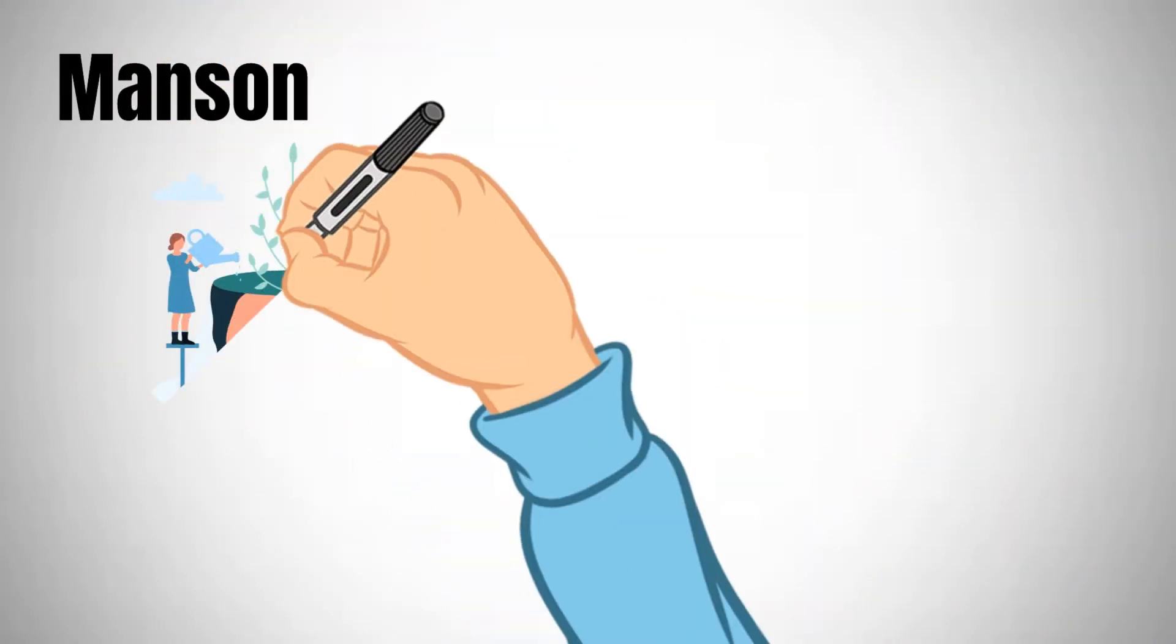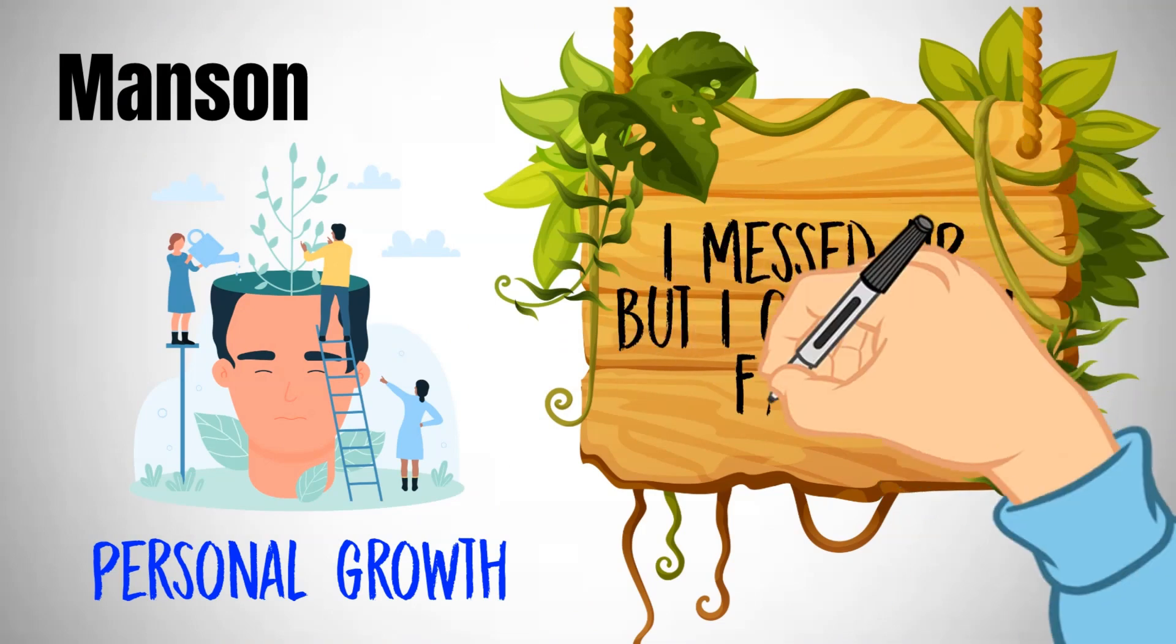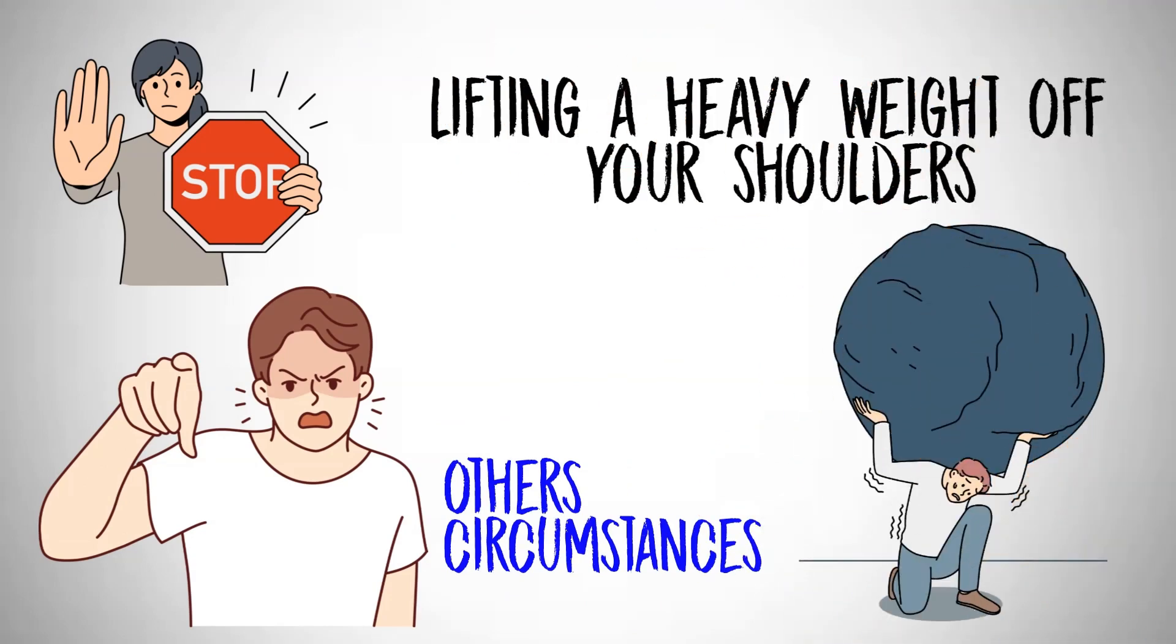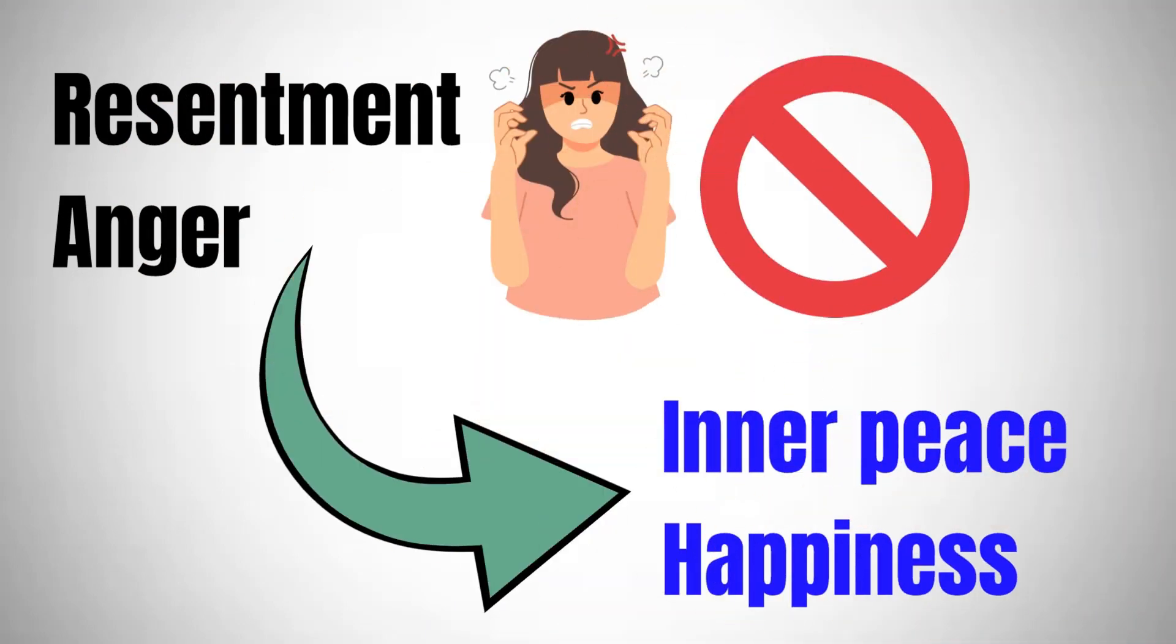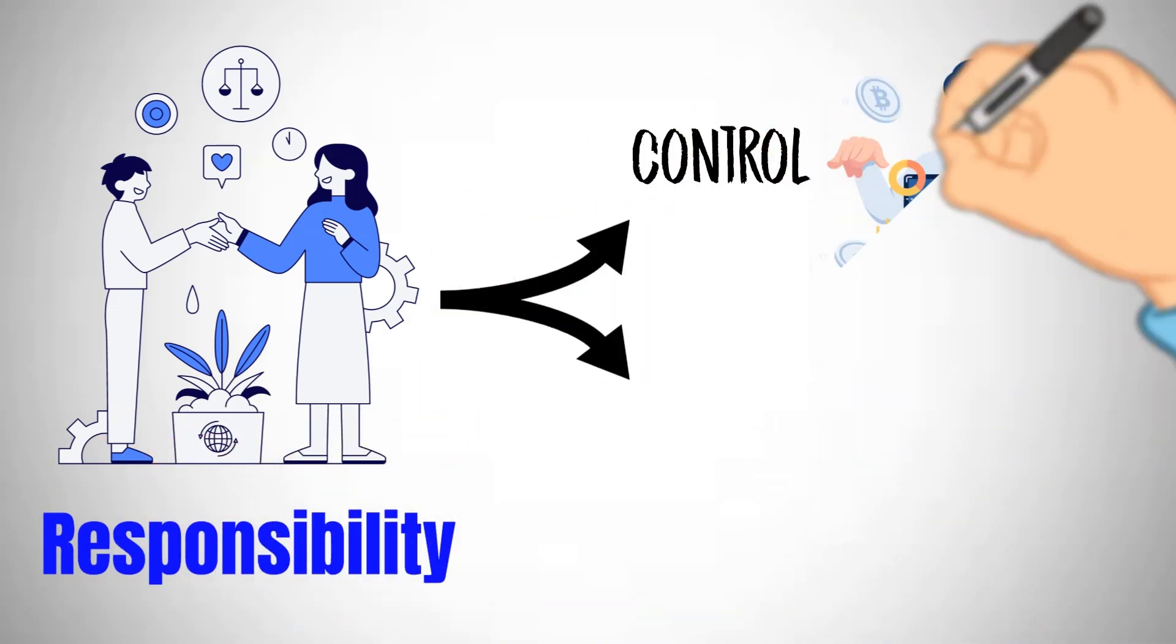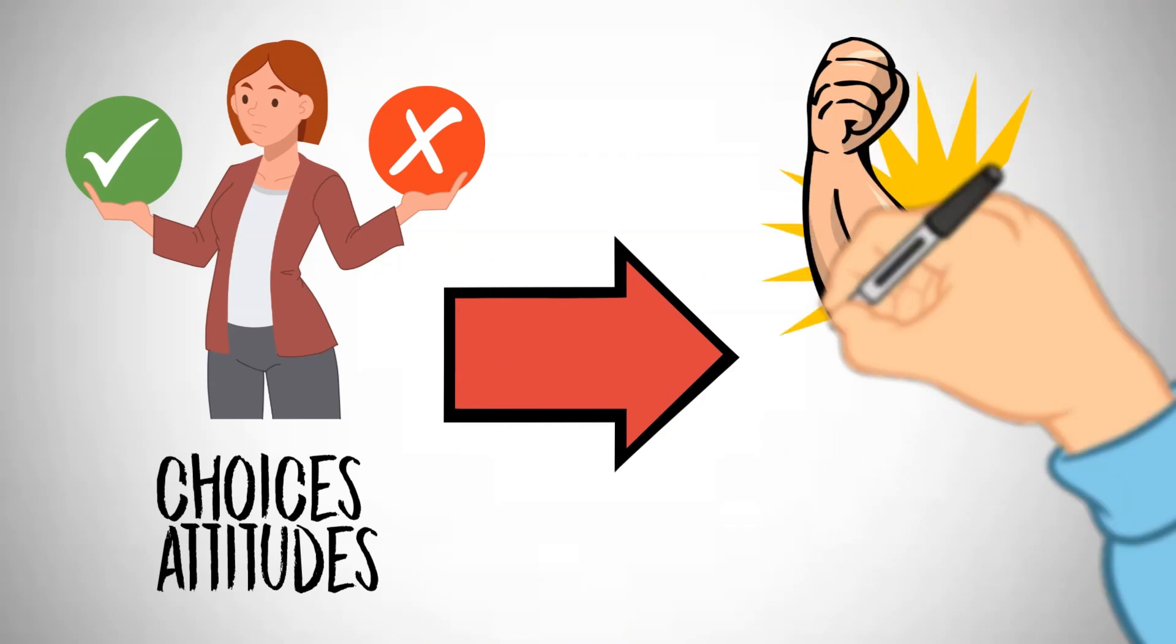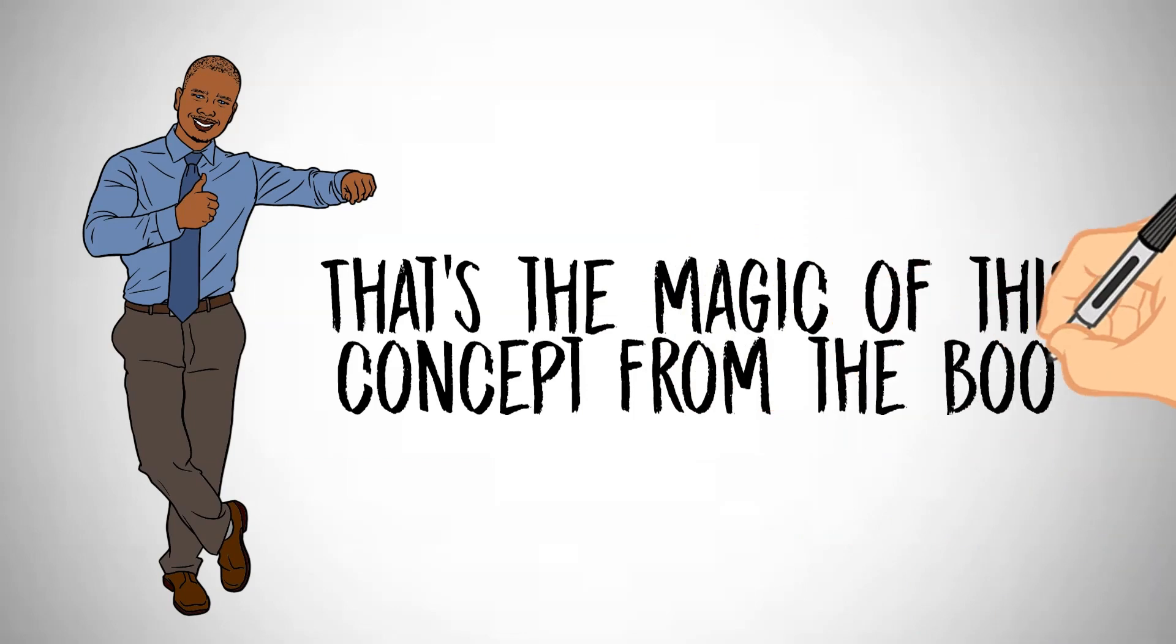Manson thinks personal growth only happens when you say, I messed up, but I can learn from it. When you stop blaming others or circumstances, it's like lifting a heavy weight off your shoulders. You're free from resentment and anger, and you find more inner peace and happiness. So by taking responsibility for your life, you're not just in control. You're also the boss of your own happiness. You realize that your choices and attitudes have the power to shape your happiness.